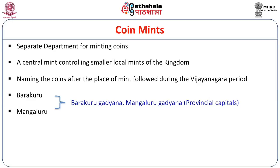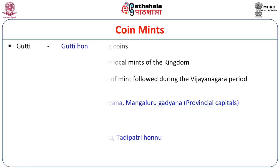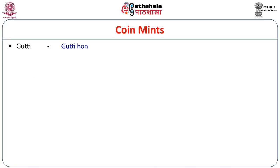Naming coins after the place of the mint was also followed by Vijayanagara rulers. Coins minted at Barakuru are known as Barakuru Gadhyayana, and those minted at Mangaluru are known as Mangaluru Gadhyayana. Mints at Tadipatri and Adhoni produced coins known as Adhwani honnu and Tadipatri honnu. Mints also existed at Tirupati, Gutti, Nellur, and Madurai. On Nellur coins, the abbreviated place name 'ne' is written on the upper side, and Madurai coins show the abbreviated name 'Ma'.